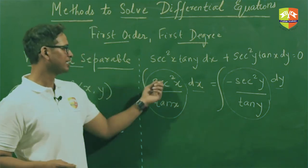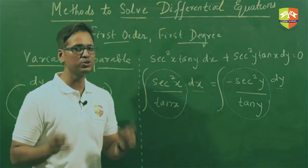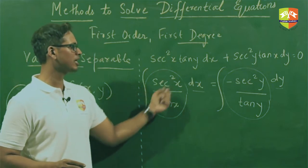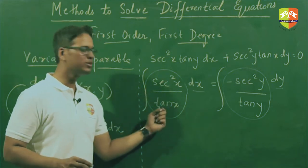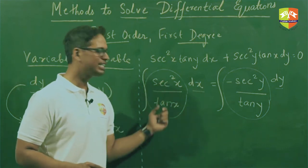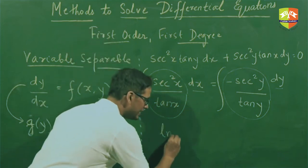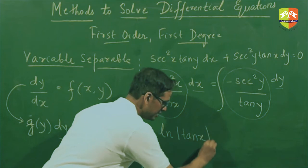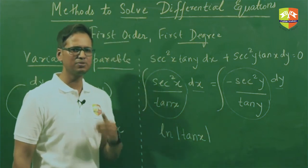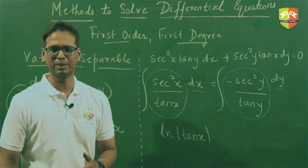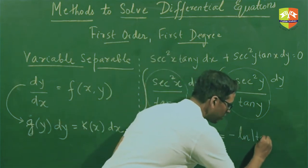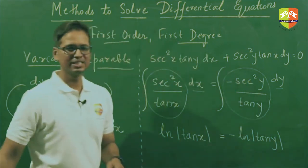Now let's integrate. You should be very good with indefinite integrals. The integral of sec²(x)/tan(x): if you let tan(x) = t, then sec²(x) dx = dt, so the integral becomes ln|tan(x)|. Similarly, the right side becomes −ln|tan(y)|. An arbitrary constant c is written as ln(c) since all terms are in log form.